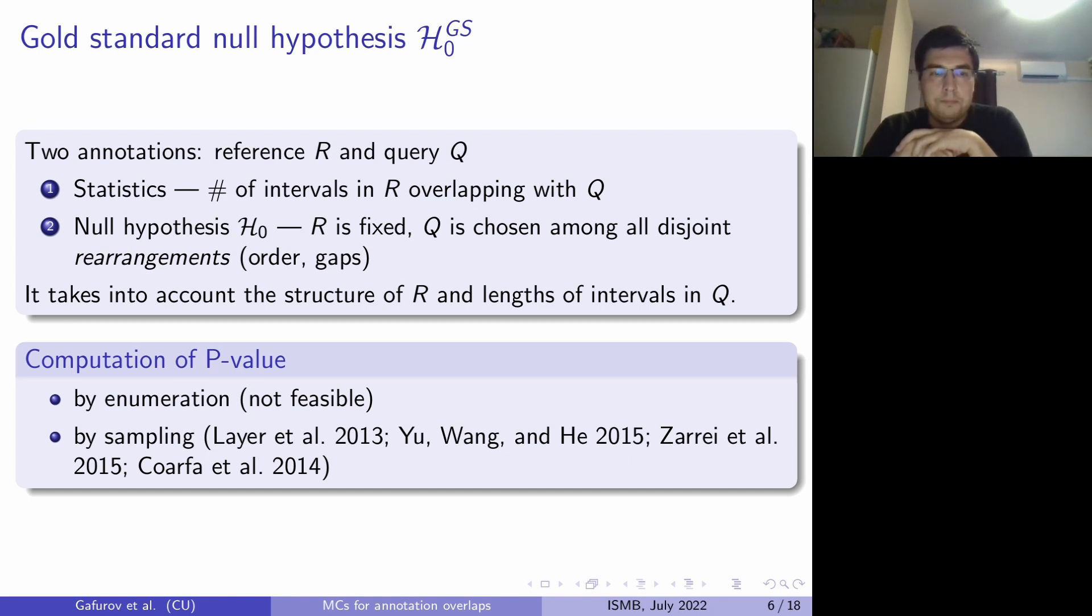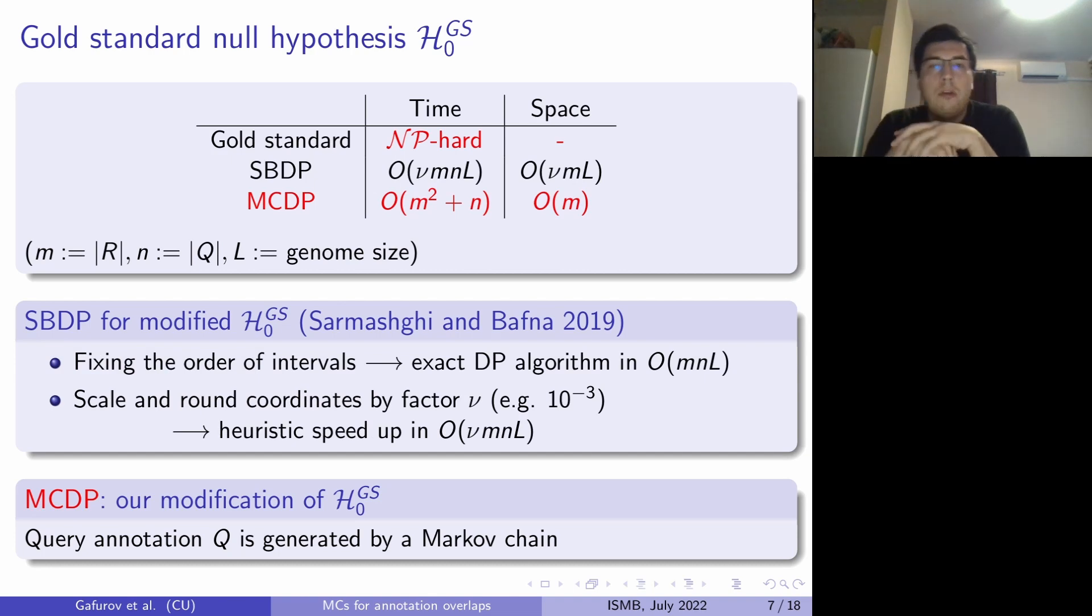However, the problem is with the computation of the p-value because the direct enumeration of all rearrangements is not feasible since there is exponentially a big amount of them. So most of the solutions are relying on sampling where they sample the random annotations and count how many times the sampled statistic is more extreme than the observed one. So our first result is that computing p-value under that gold standard with rearrangements is indeed NP-hard.